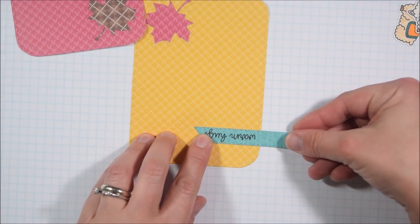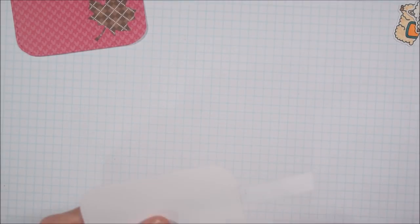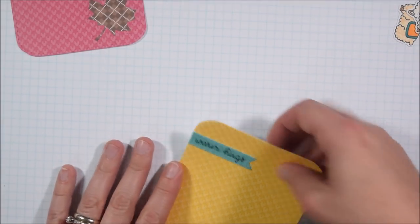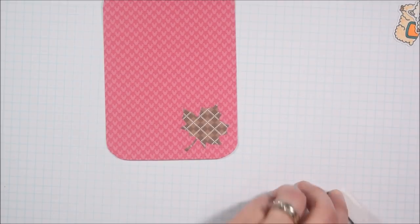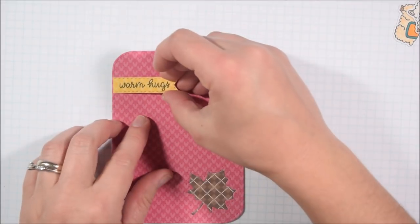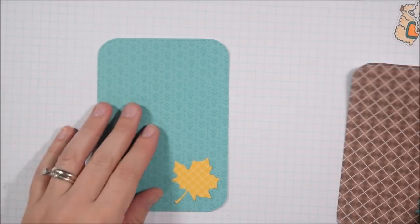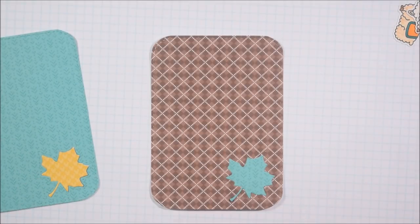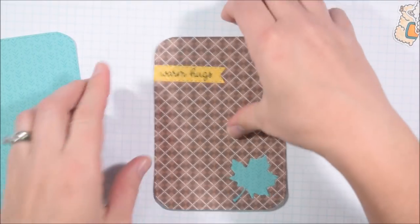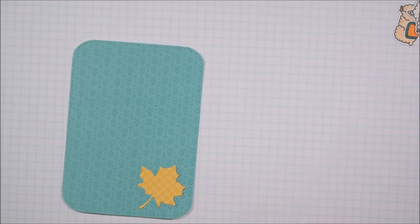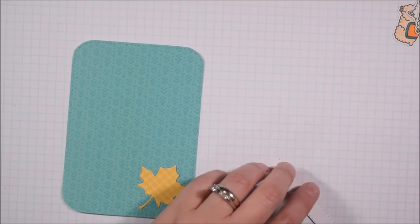In terms of the sentiments I took some of the scraps of the lawn fawn papers and I cut this banner die also from the cat scrappiness fall essentials crafters essentials fall die set. It's all from the same set. And I stamped the warm hugs from the Sunny Studios alpaca holiday stamp set. I thought that was the best fall sentiment.